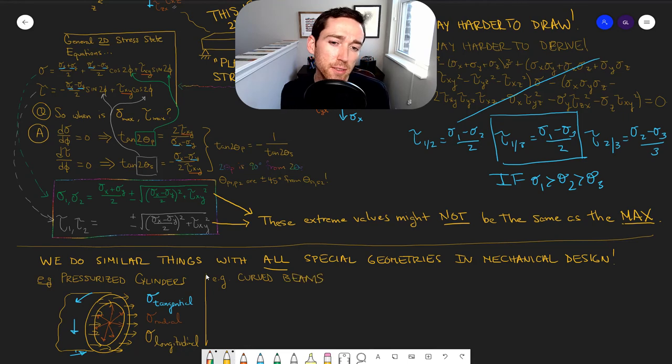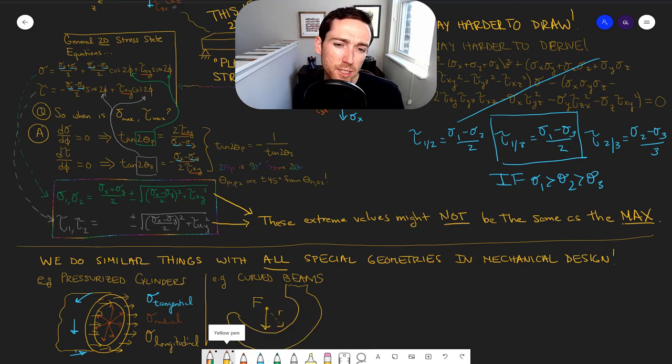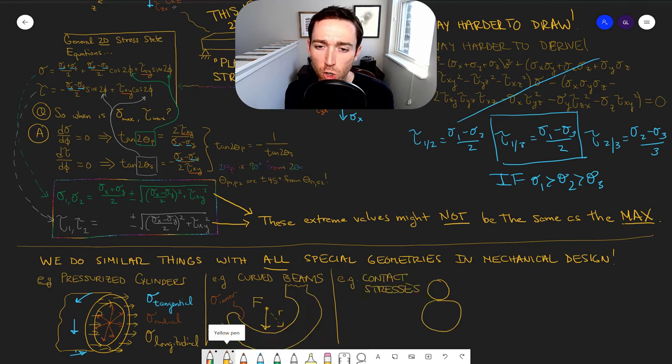You might also have something just like a curved beam. So you're not that worried about anything we've seen so far. What you're really worried about is what's happening on the inside, what's happening on the outside. That's where it's going to break.